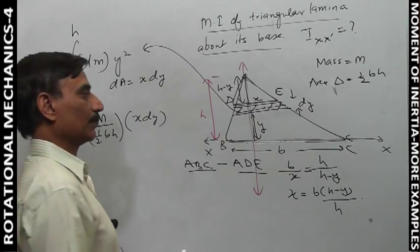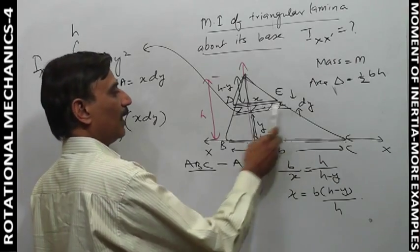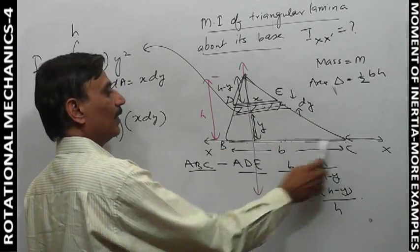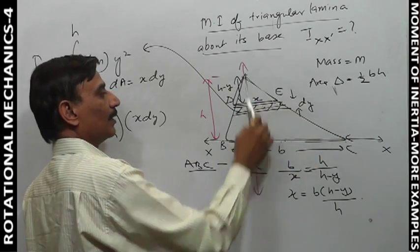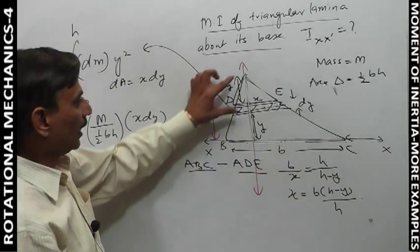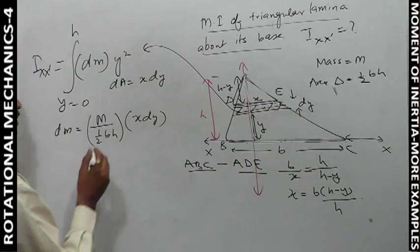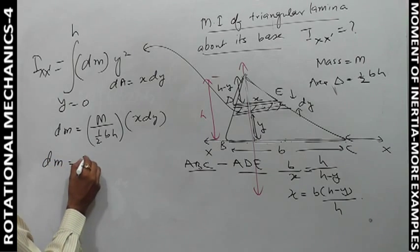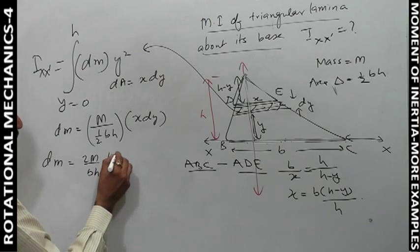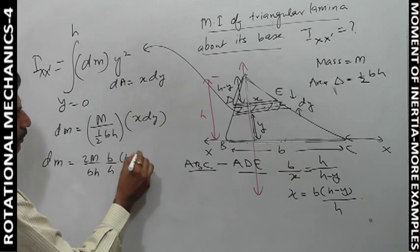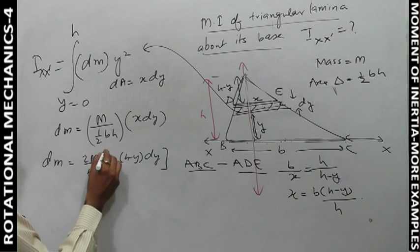This means x = b(h-y)/h. We used the similar triangle basic concept. Now substituting this x into dm: dm = (2m/bh)·(b/h)(h-y)·dy.